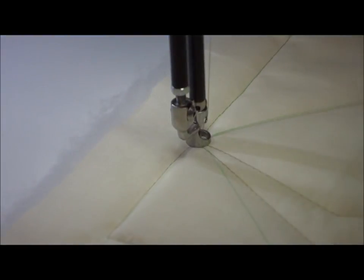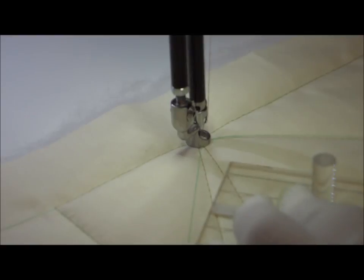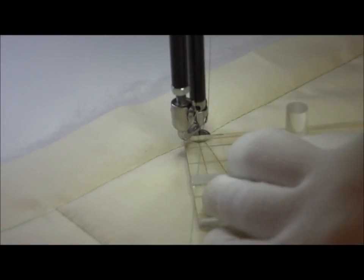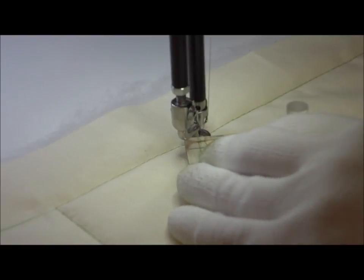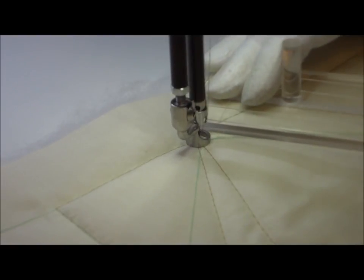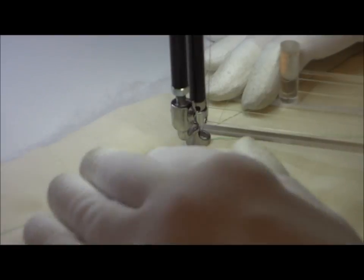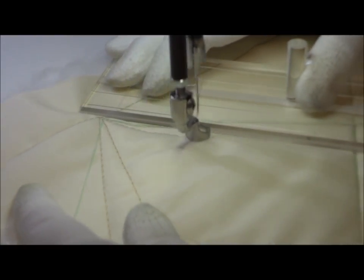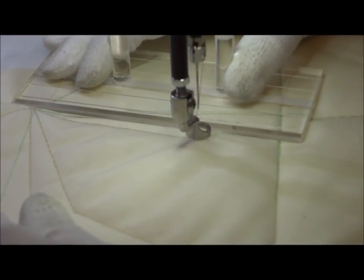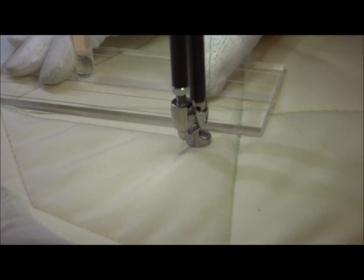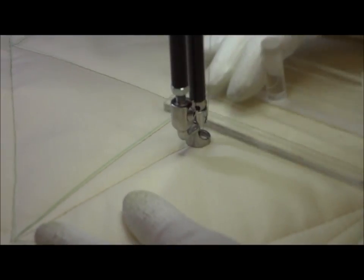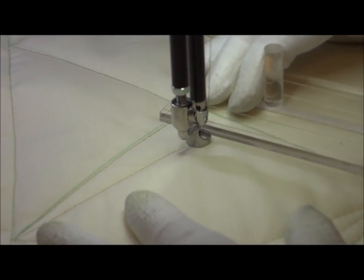At this point, we're ready to work down our opposite direction. Now you notice before we had the ruler to the back of the foot, but since we're working in another direction, we now have to move it on the front part of the foot. Again, we're keeping that ruler one inch away by using the markings on our ruler grid. And now we're going back down to the bottom pivot point.